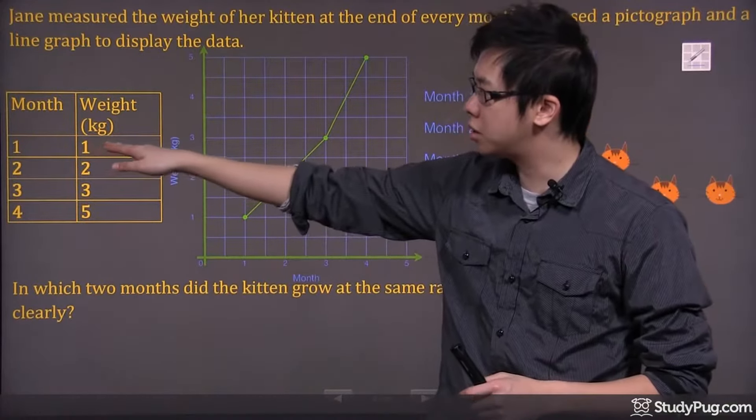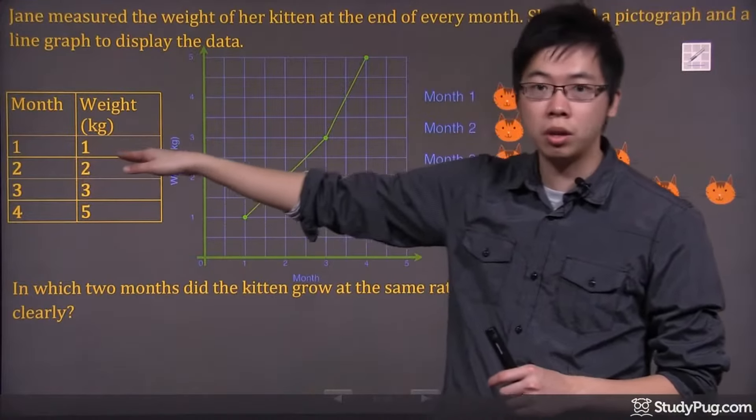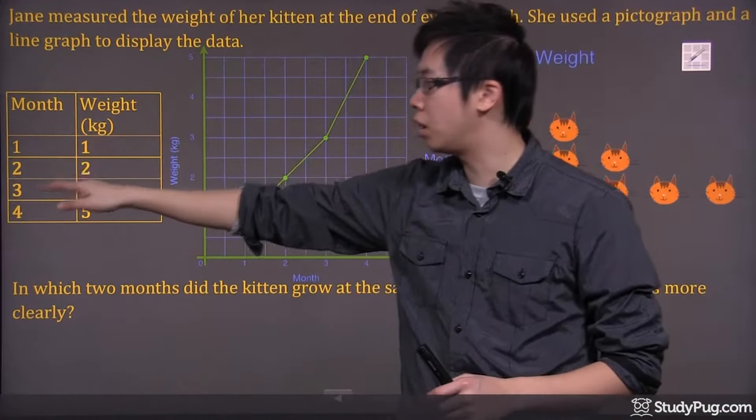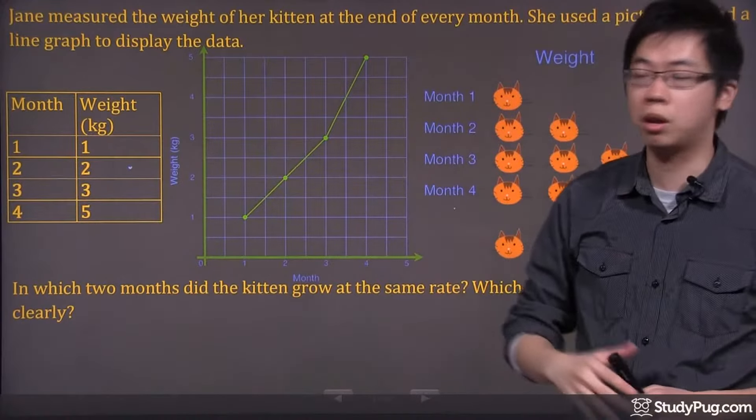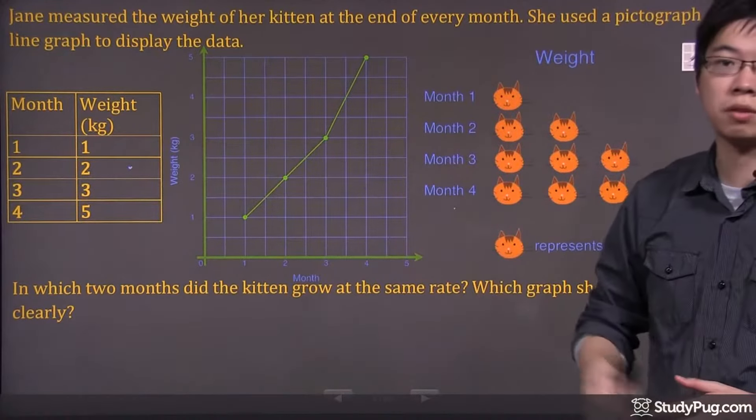If you look at the first one, at the end of the first month it was one kilogram, at the end of the second month it was two kilograms, the end of the third month it was three kilograms, and the fourth month it was five kilograms.